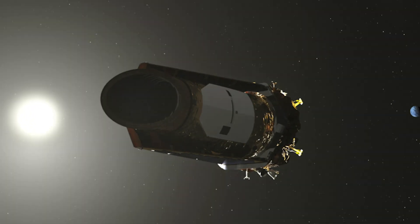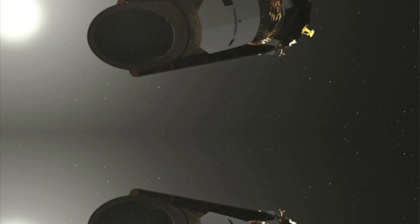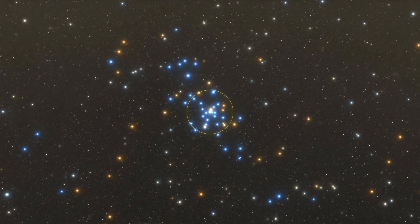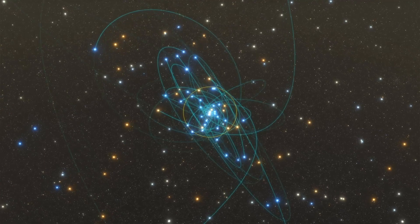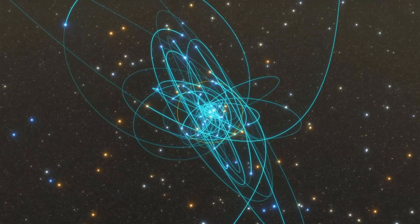It is a gas giant exoplanet that orbits an F-type star. Its mass is 5.88 Jupiters and it takes 3.8 days to complete one orbit of its star.